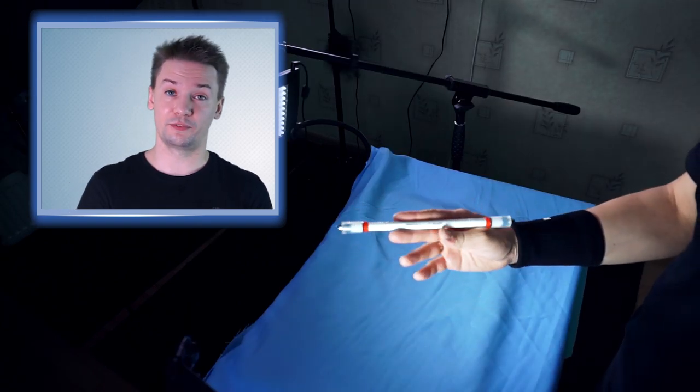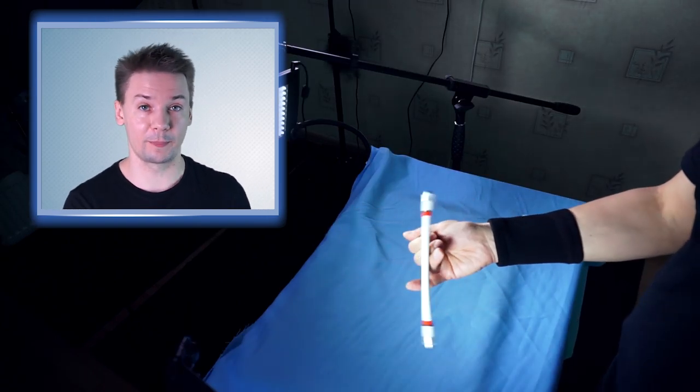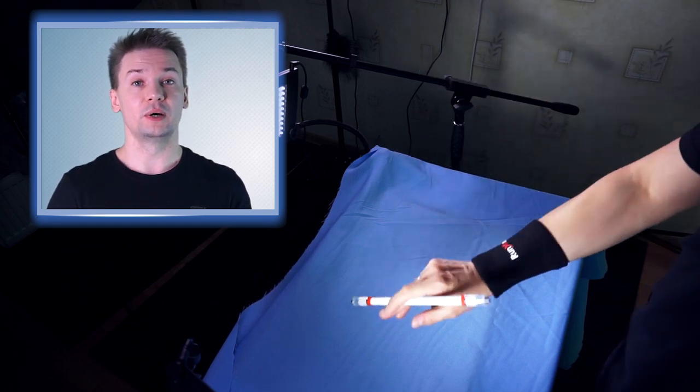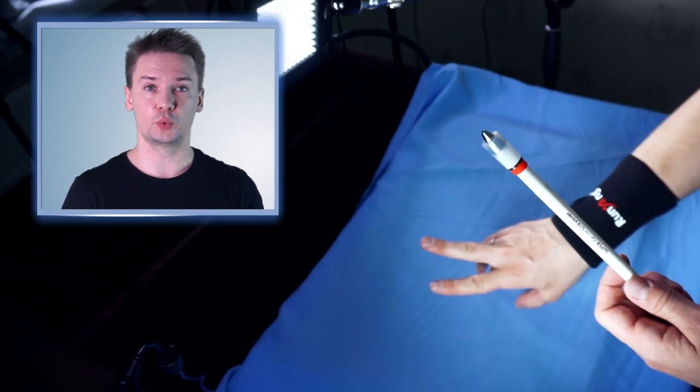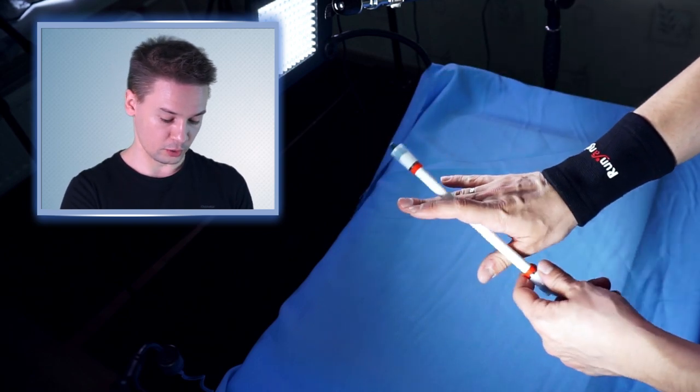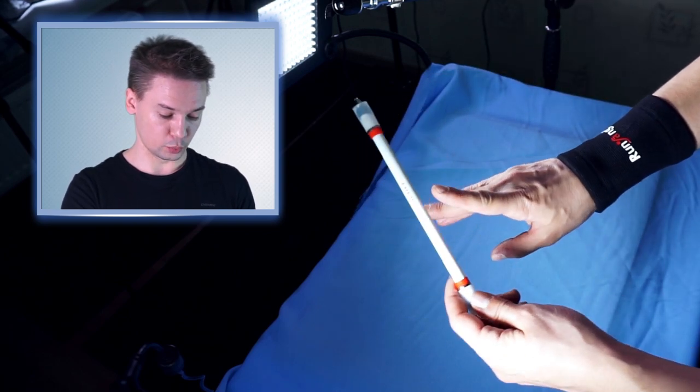For that you will need to adjust the force with which you throw your pen mod, so it wouldn't go too high, so you will lose control over your pen mod, but will be high enough, so you could turn your hand and catch pen mod between your index and middle finger in slot 1-2.